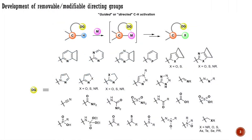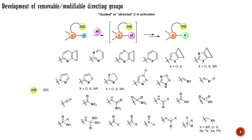One can observe most of the directing groups developed during the last two decades. A common feature for most of them is that they are connected to the main molecule via a carbon-carbon bond. As you know from the general organic chemistry course, carbon-carbon bonds are not easily accessible for chemical transformations, meaning that the removal or further functionalization of these directing groups is almost impossible. The inertness of these directing groups may become a serious issue during multi-step processes where all the functional groups need to be removable or modifiable.